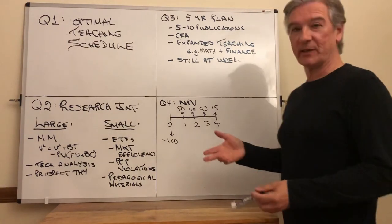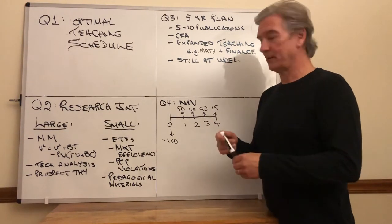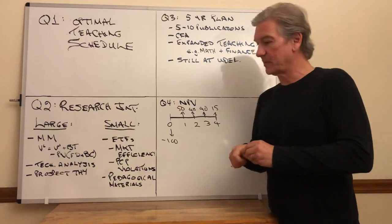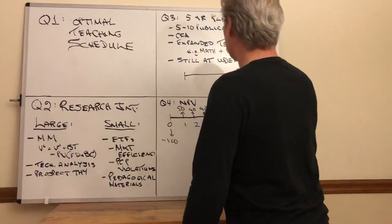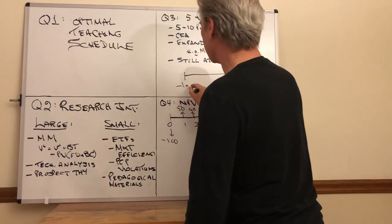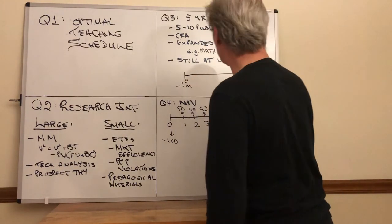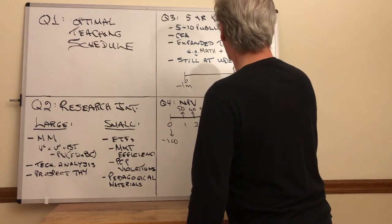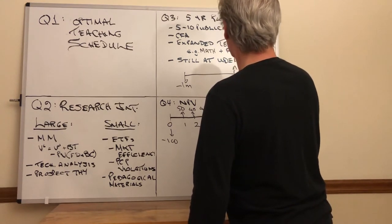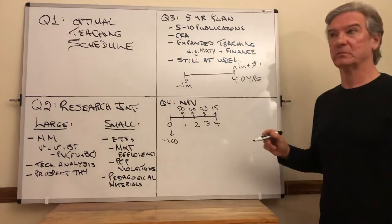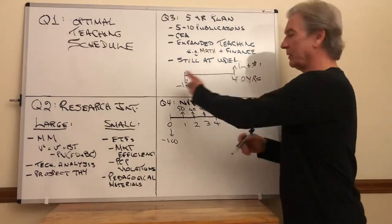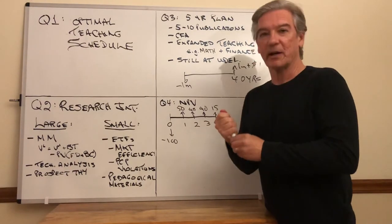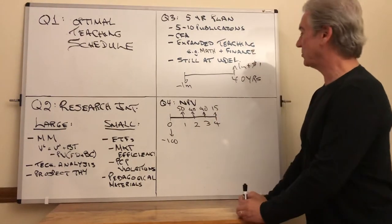You can take this to an extreme and say, well, you know, at time zero minus one million dollars, and then 40 years later you get back one million plus one dollar. Well you got your money back and you actually got an extra dollar, but you had to wait 40 years in order to get it. That wouldn't be a very good investment. I don't think many people would choose that.